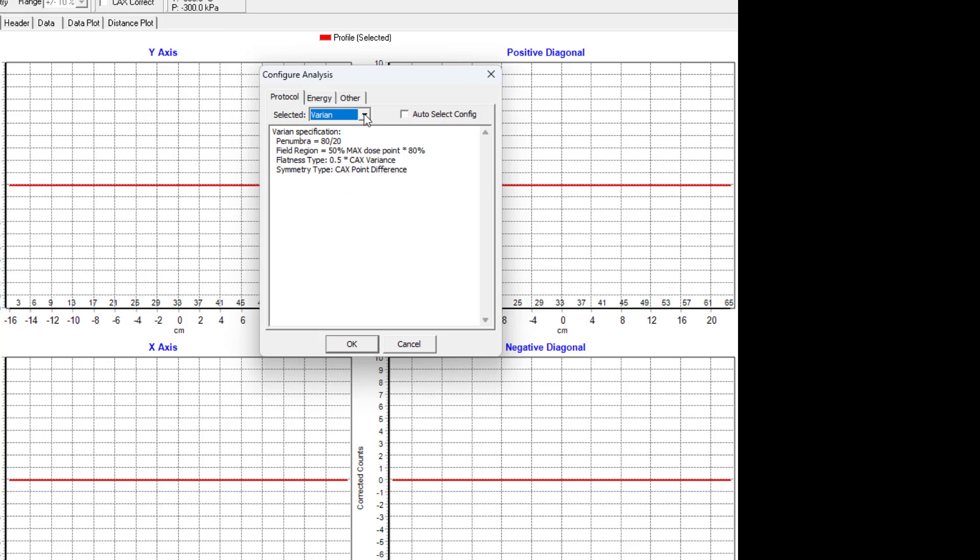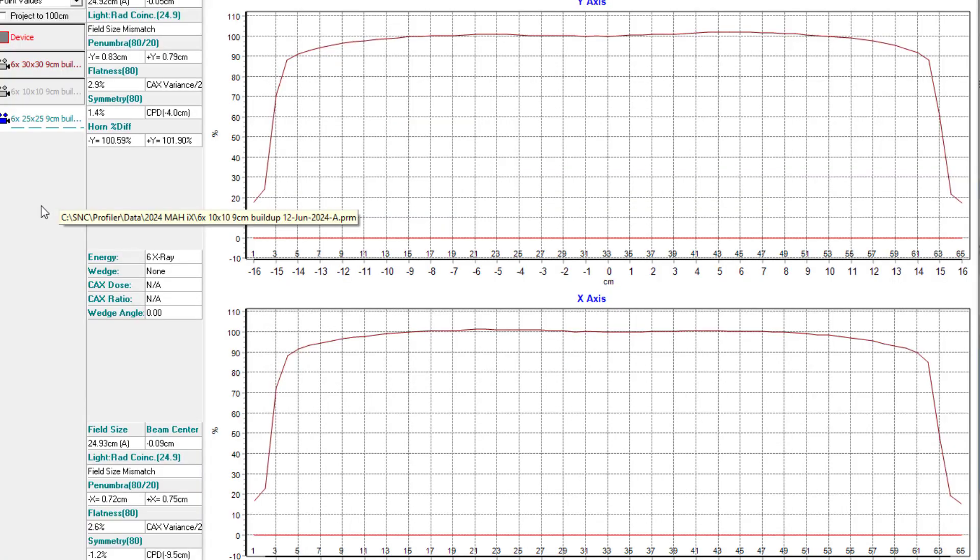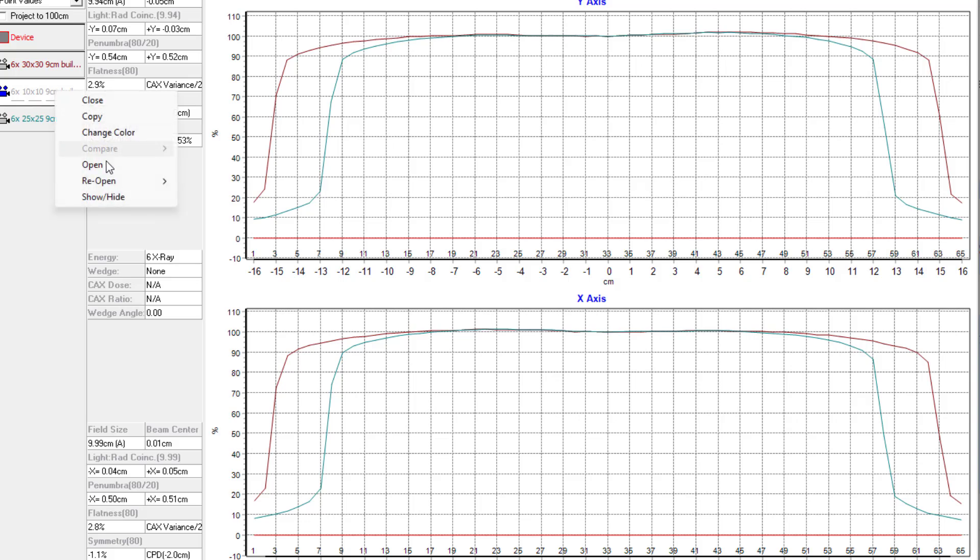And in the software, it's important to look at the different protocols for the analysis. And here we have a real beam. Let's take a look. We have a 10x10, a 25x25, and a 30x30. And we can see the software outputting the flatness and the symmetry.